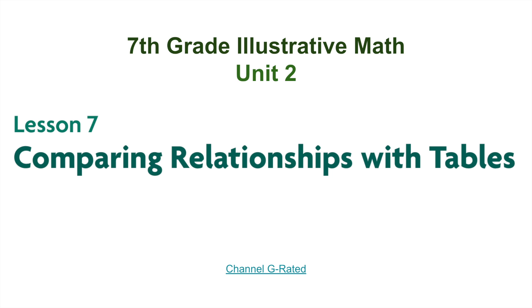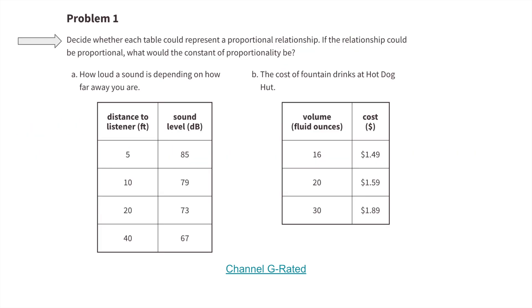7th grade, Unit 2, Lesson 7: Comparing Relationships with Tables. Decide whether each table could represent a proportional relationship. If the relationship could be proportional, what would the constant of proportionality be?